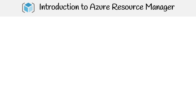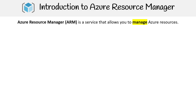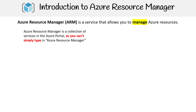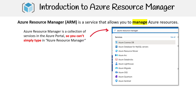Let's take a quick introduction into Azure Resource Manager, which is short for ARM, and is a service that allows you to manage Azure resources. One thing that really confused me about the service when I first started using Azure was that you couldn't just type in Azure Resource Manager, and the reason why is because it's actually a collection of services, and it makes up what we call this management layer.